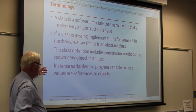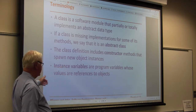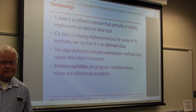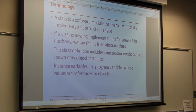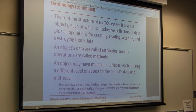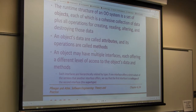Instance variables are the variables that have an instance within this program, and they refer to objects. A system then is a set of objects. The object's data are called its attributes, and the operations — what it actually does to that data — are called its methods.